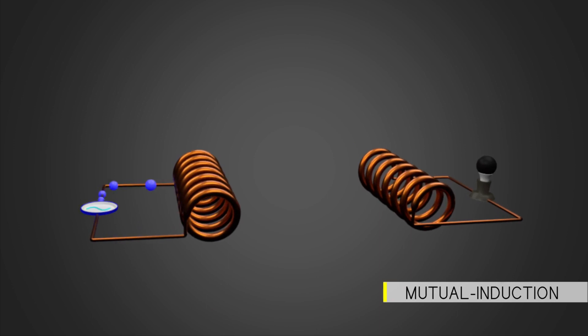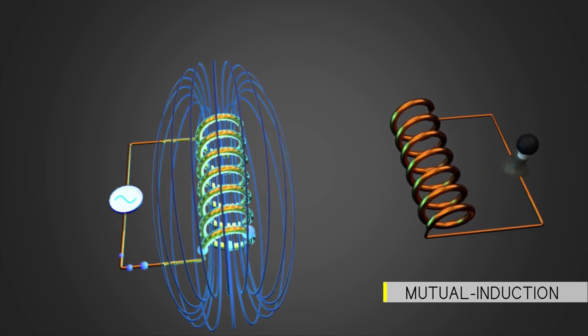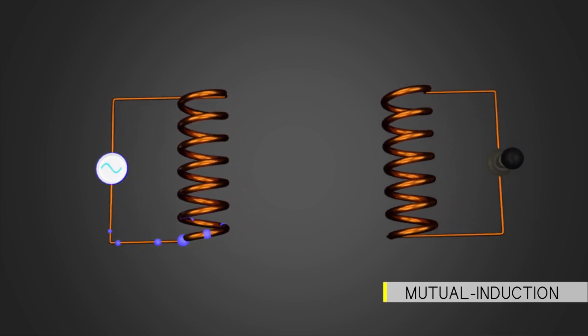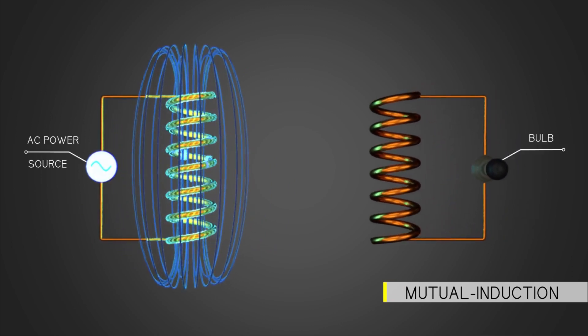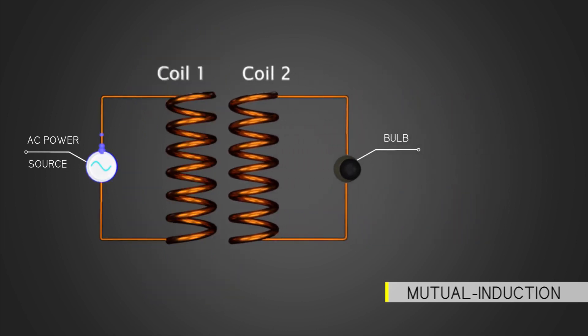As we pass alternating current, as usual, a flux will be produced in it. Now if we bring another coil, say coil two, near coil one, a part of the magnetic flux from coil one links with coil two.